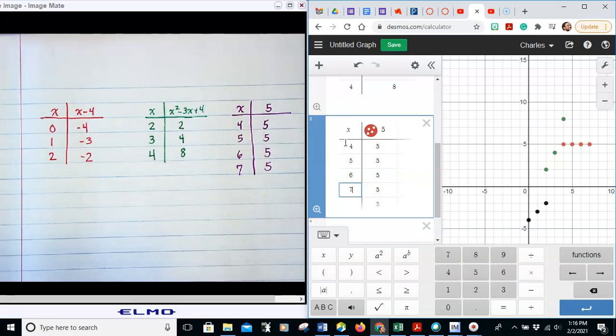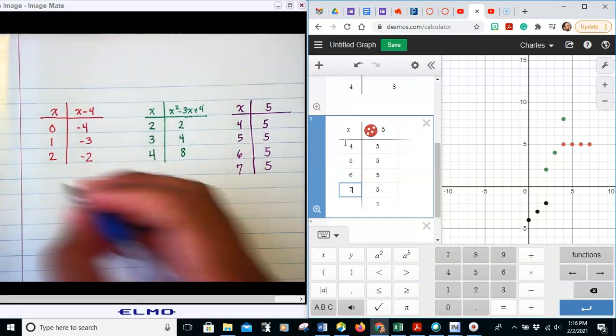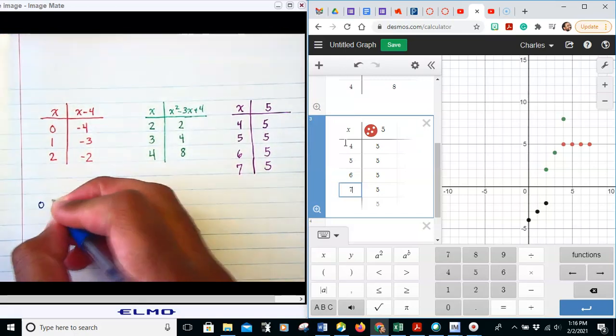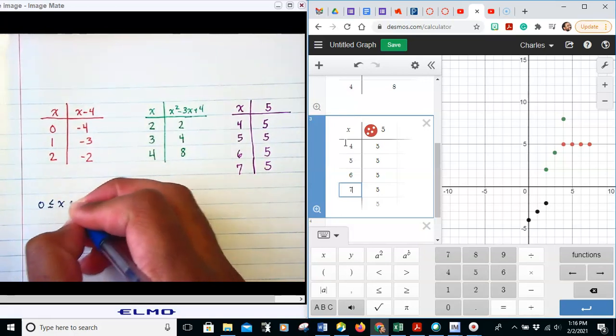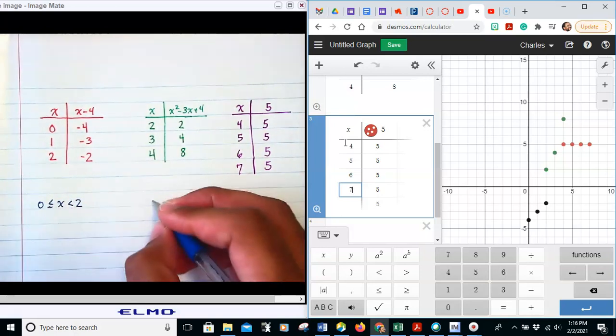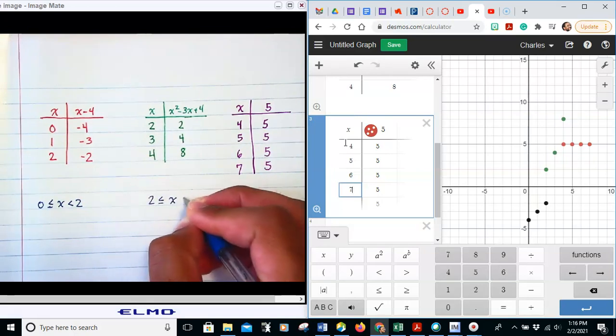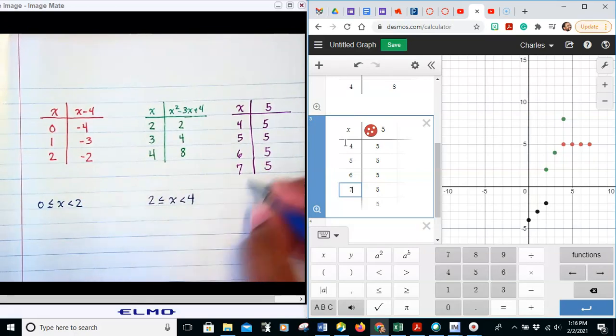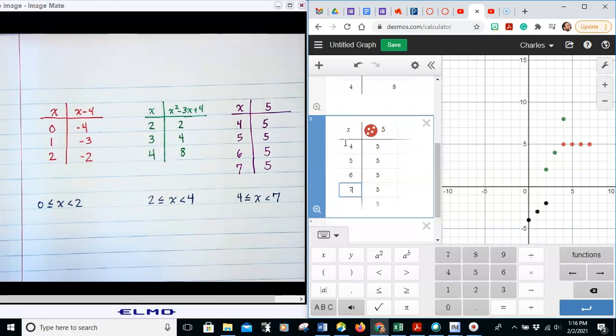So after that we got our tables filled in now. We have to again deal with our open and closed circles. So we have that part, now with this we're going to go ahead and let me see what color I'm going to use.